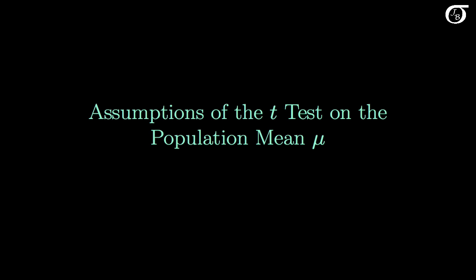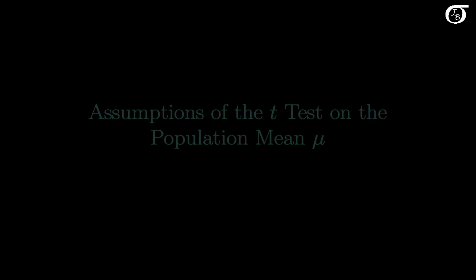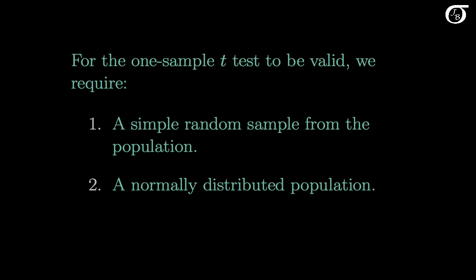Let's take a look at the assumptions of the t-test on the population mean mu. For the one-sample t-test to be valid, we require two things. First, we need a simple random sample from the population. If our sampling design is poor, then our conclusions may be very misleading.